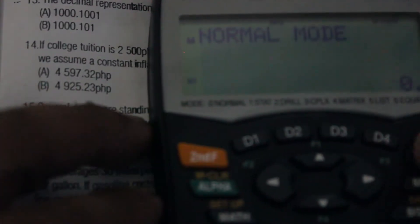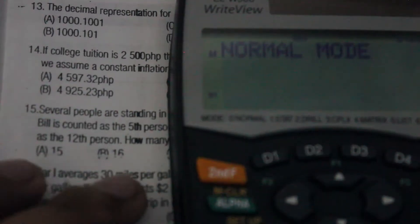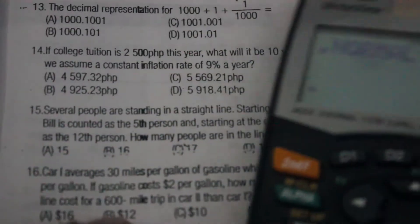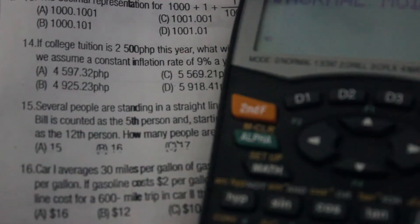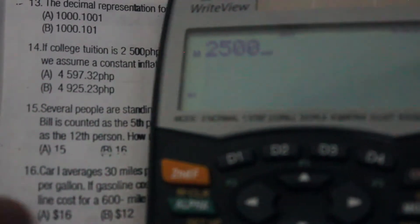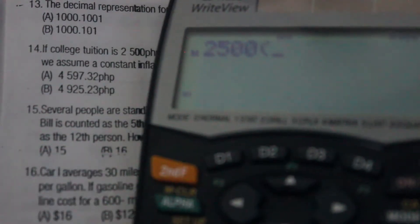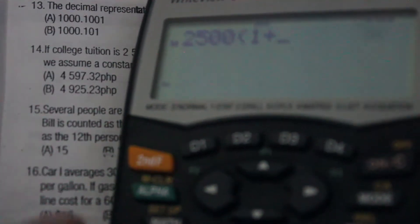In other words, we can use the formula of the compound interest. So let's use the calculator. I'm using here the Sharp calculator guys. So let's start with our principal: 2,500 and open parenthesis.